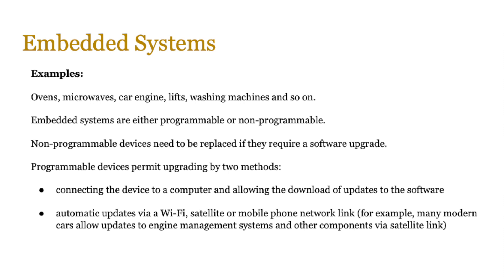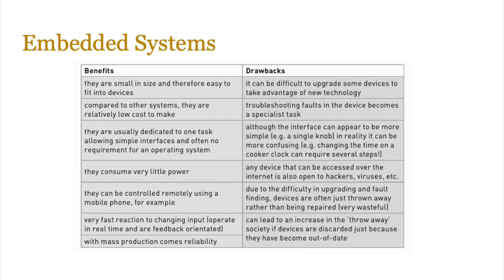Chances are the update is directly downloaded to your device without going through a computer and a cable. Embedded systems have advantages and disadvantages. Some benefits are that they're small in size and easy to fit into devices, relatively low cost to make, usually dedicated to one task allowing simple interfaces, often with no requirement for an operating system. They consume very little power, can be controlled remotely, respond very quickly to changing input in real time, are feedback oriented, and through mass production techniques are often very reliable.